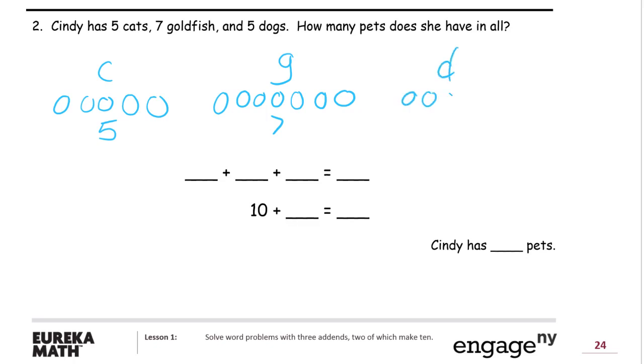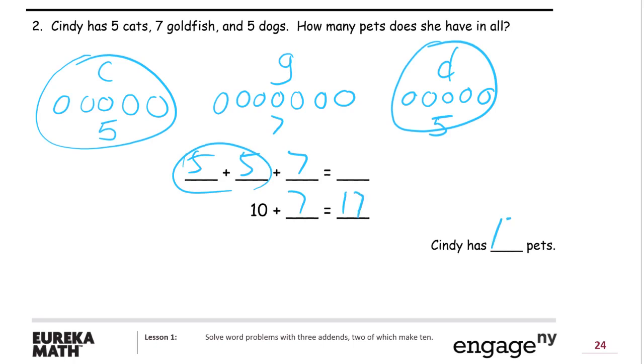One, two, three, four, five. Five of those. Five and five, that's one of our favorite partners to ten. So add those first. Five plus five first, and then the seven. The two fives together make it ten. Ten plus seven is 17. Cindy has 17 pets.